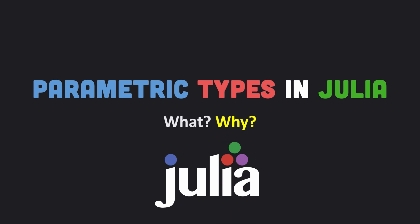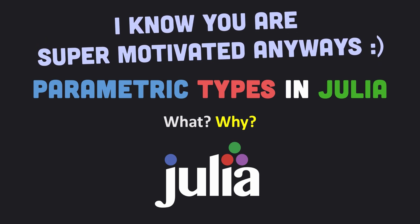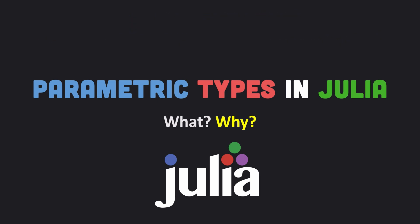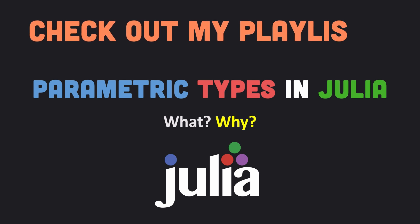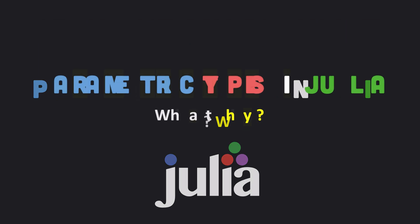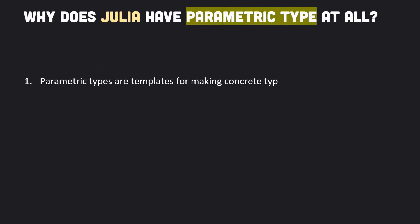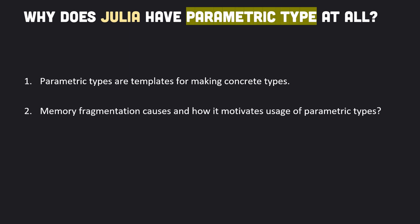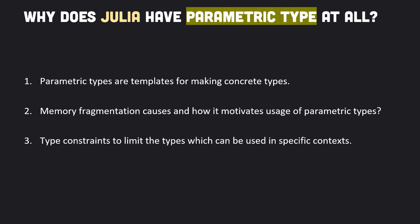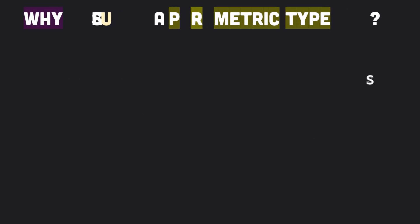The main question is why we should use parametric types and what is the motivation behind them. If you are not familiar with Julia's type system, I strongly recommend you check out my Julia programming for beginners playlist. In simple words, parametric types are templates for making concrete types. The problem boils down to managing memory — specifically memory fragmentation — and why using parametric types helps address memory management problems. Parametric types also provide type constraints to limit which types can be used in a specific context.